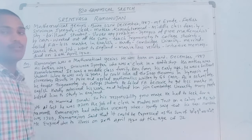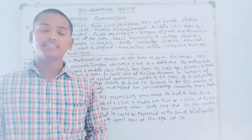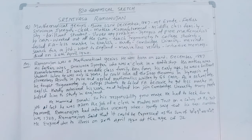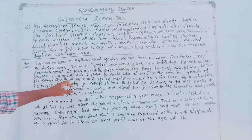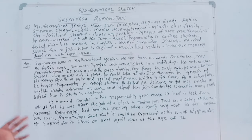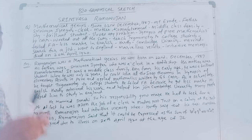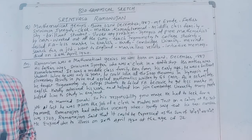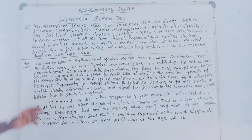When he was only 16 years old, Ramanujan could solve all the 5,000 theorems in the 'Synopsis of Elementary Results in Pure and Applied Mathematics' written by G.S. Carr. As a school boy, he taught trigonometry to college students — that is one of the marvellous and awesome achievements he accomplished during his school age, showing the greatness of Ramanujan sir.